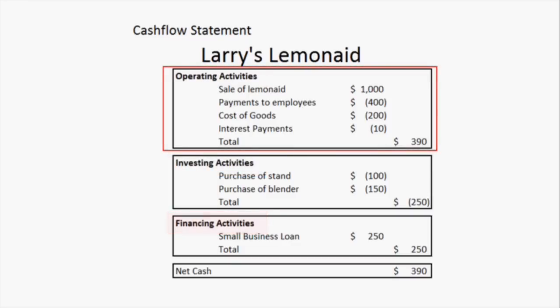Operating activities cover all of your normal business operations. For example, whatever it is a company sells — in this case lemonade — we see there the sale of lemonade is $1,000. That's how this company makes most of its money. Normal operations would also require paying employees, purchasing lemons and sugar and cups, and of course other items like interest payments.